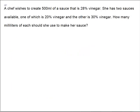A chef wishes to create 500 milliliters of a sauce that is 28% vinegar. She has two sauces available: one is 20% vinegar and the other is 30% vinegar. How many milliliters of each should she use to make her sauce? So we don't know how much of each we're going to use, but we're going to make a total of 500 milliliters. We have two sources — 20% and 30% vinegar — and the end result is going to be 28% vinegar.